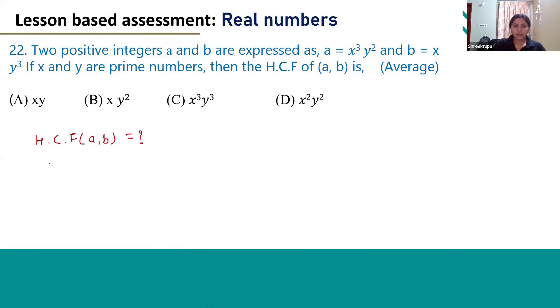They have given a as x³ multiplied by y², and b as x times y³. So both x and y are common in both the numbers.